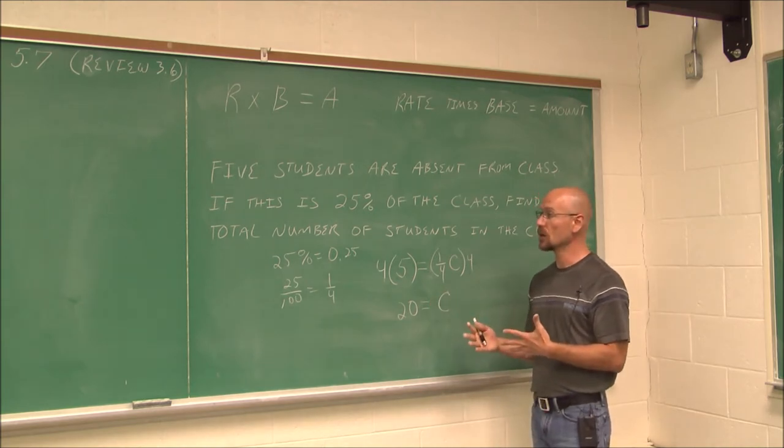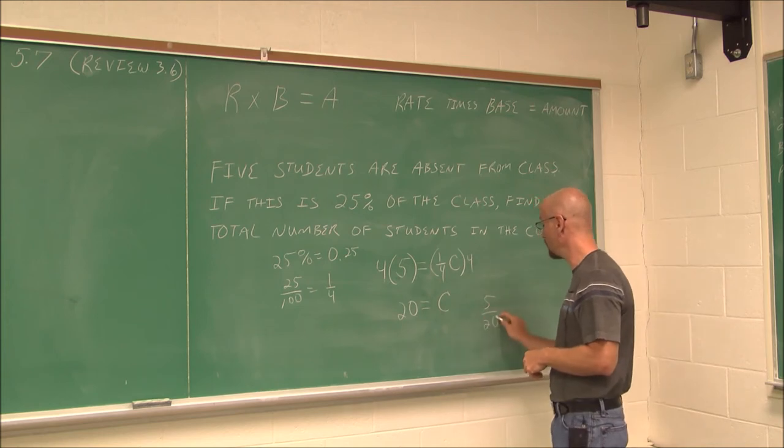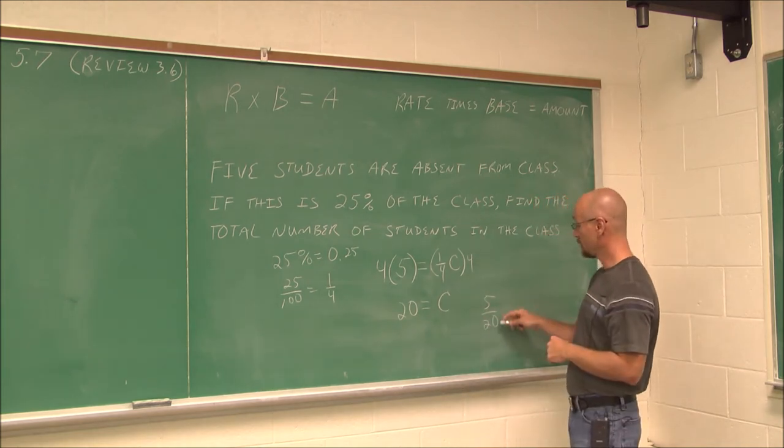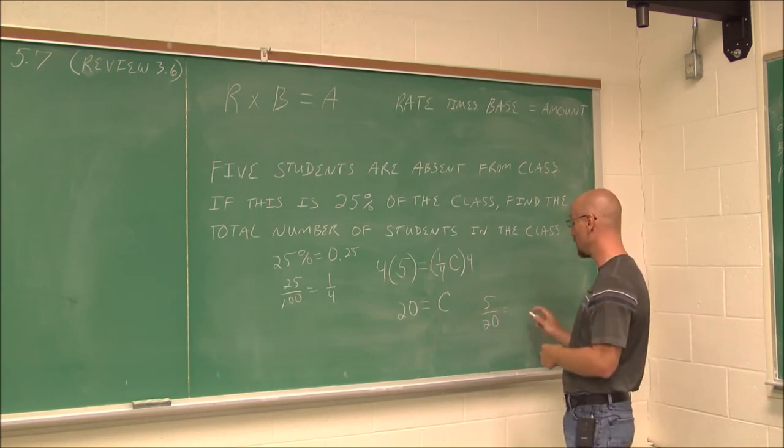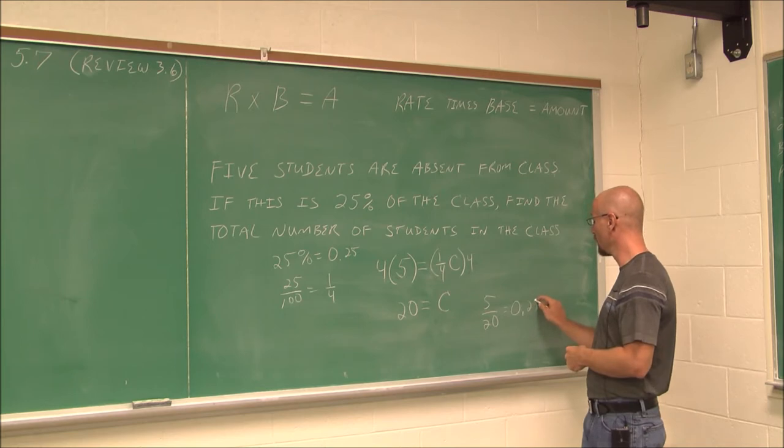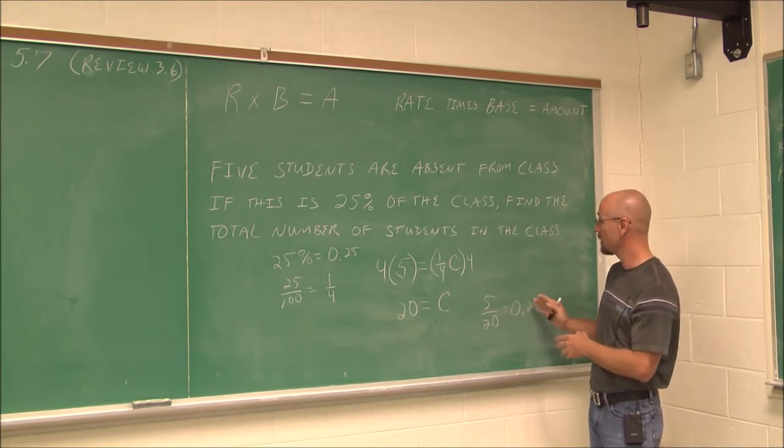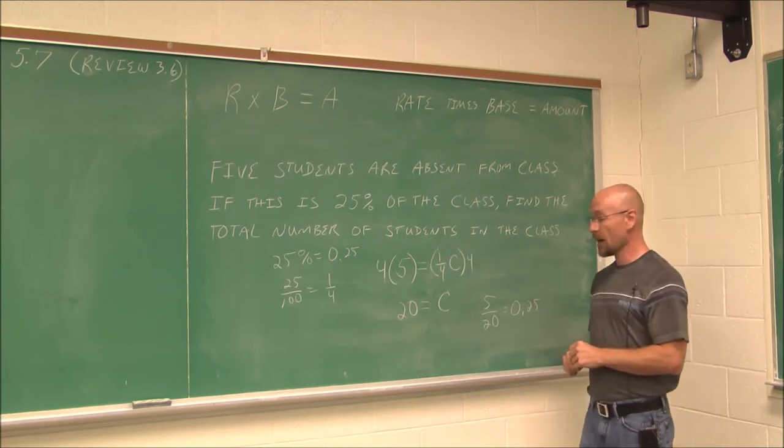And then we can check our work. Is 5 out of 20 students 25%? And if we do this, we will get, if we actually did the division, carried it out to a decimal, we'd get 0.25, which we know is 25%.